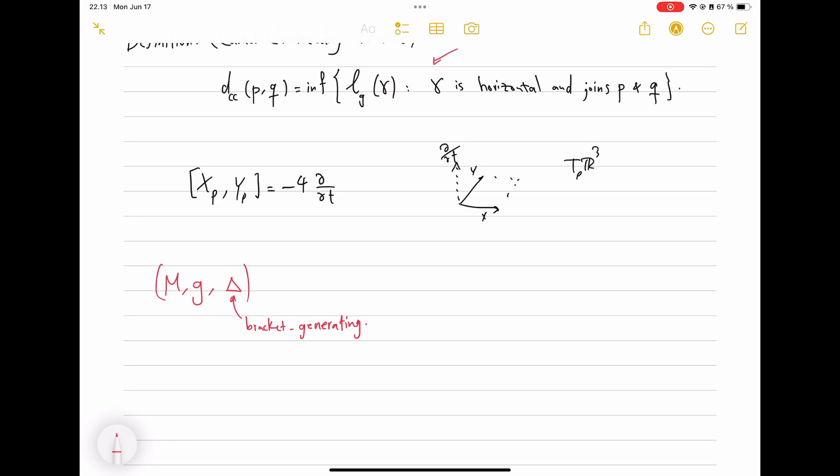And there are theorems due to Chow, sometimes called Chow-Hörmander also, that guarantee that under bracket generating condition plus some, say, connectivity of the whole manifold and stuff, it follows that if you have this condition, then every p and q can be connected by horizontal curves and we even have qualitative estimates, kind of Hölder estimates on how different distances are.